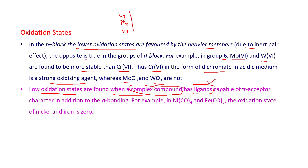When a complex compound has ligands capable of pi-acceptor character in addition to sigma bonding — meaning in the case of metal and ligand, a sigma bond is there, but at the same time some pi-acceptor character is also present — then in these types of complex compounds, lower oxidation states of transition elements are stable. For example, in nickel tetracarbonyl Ni(CO)4 and iron pentacarbonyl Fe(CO)5, the oxidation state of nickel and iron is zero. These are complex or coordination compounds.